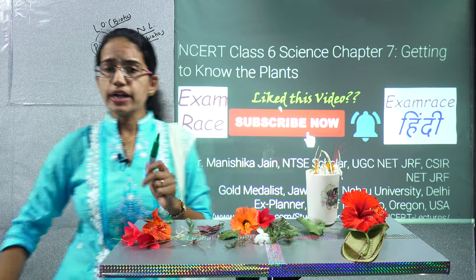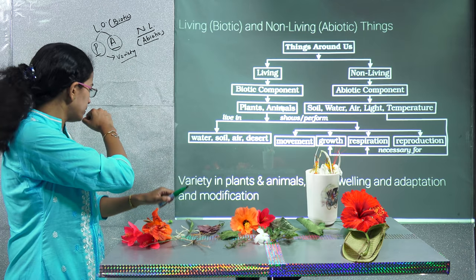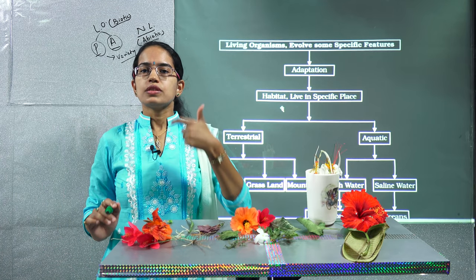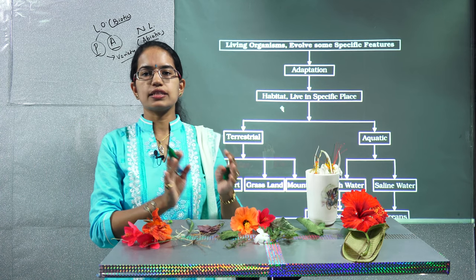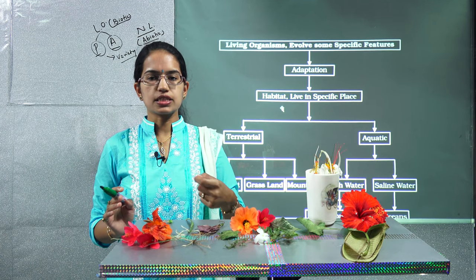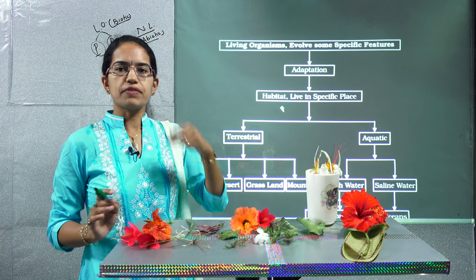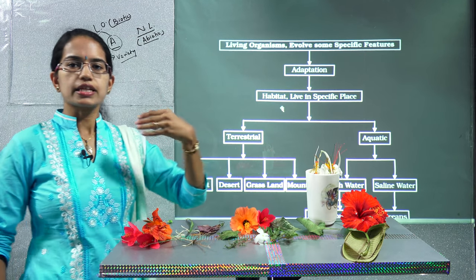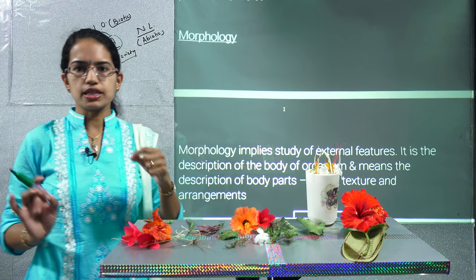Understanding these characteristics, we talk about the two components — the living and the non-living — and then we talk about how these organisms adapt to their surroundings, be it the terrestrial organisms or the aquatic organisms. Each one has different characteristics. We will talk more about this in the ninth chapter, where we will focus exclusively on the various adaptations. So that is what we would be covering in the ninth chapter. We have just brought a summary here to help you better understand the varieties that exist within an organism.